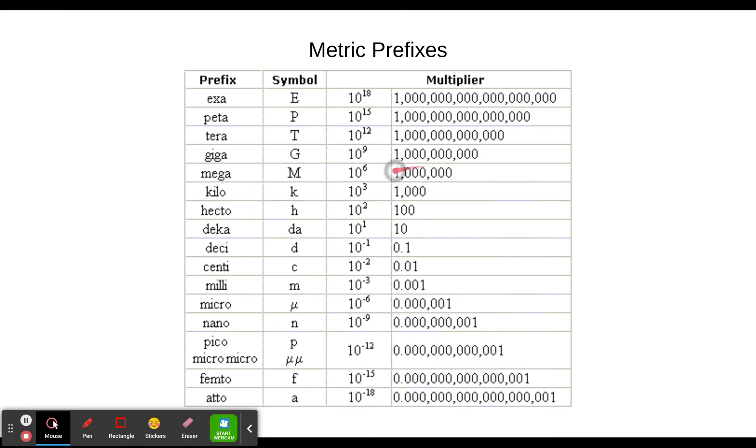Okay so a million is right here. So instead of saying a million meters we could say it's three megameters. Mega just meaning a million. Three million, three megameters. Okay typically we use kilometers for big distances and we would say a thousand kilometers which would be a million meters.